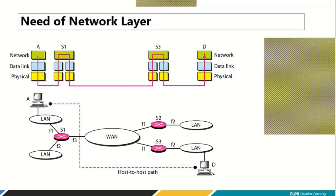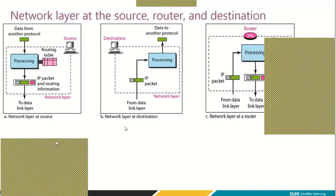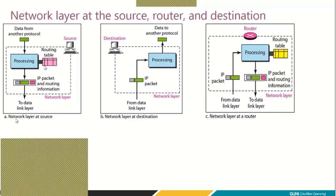So when you want to carry your packet across the network, you need a network layer. Now look at this diagram — it is very important. Diagram A represents the network layer at the source. Diagram B represents the network layer at the destination. Diagram C represents the network layer at the router.